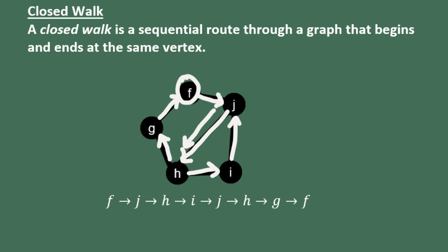This would not be a closed trail because it's not a trail since it has a repeated edge between J and H.